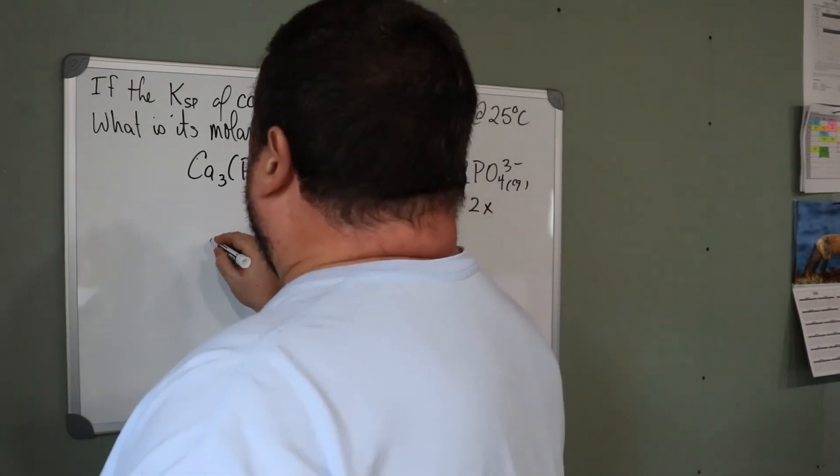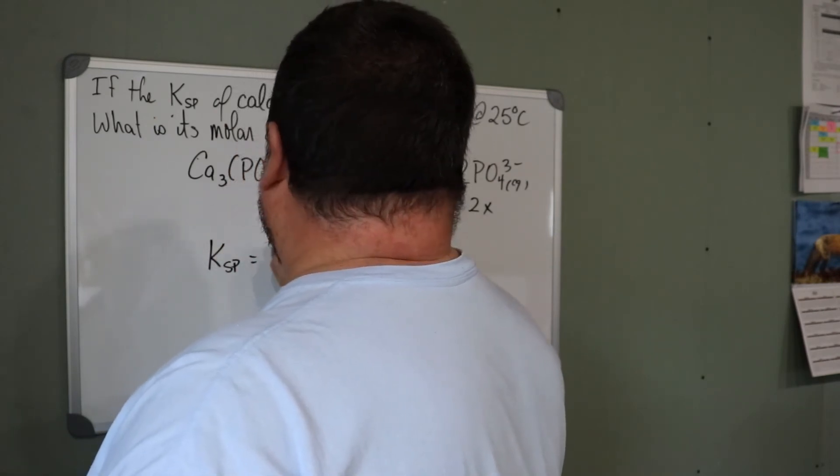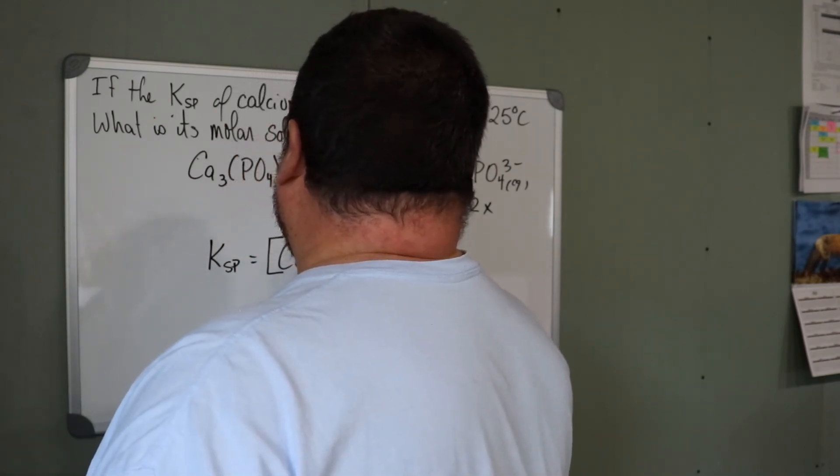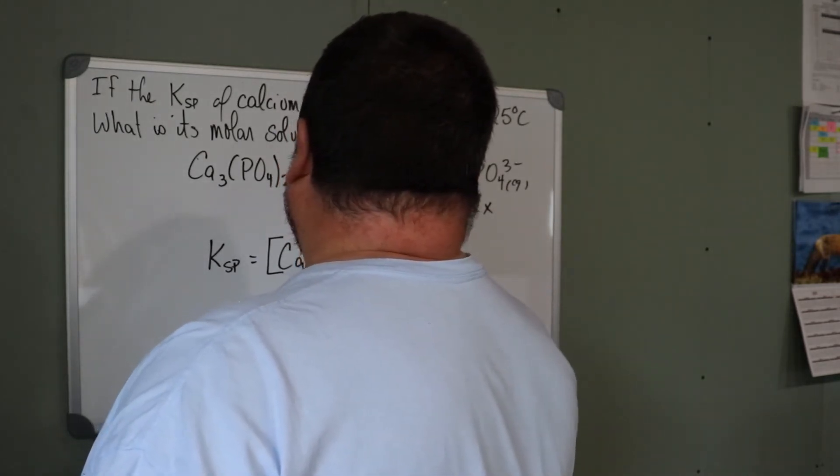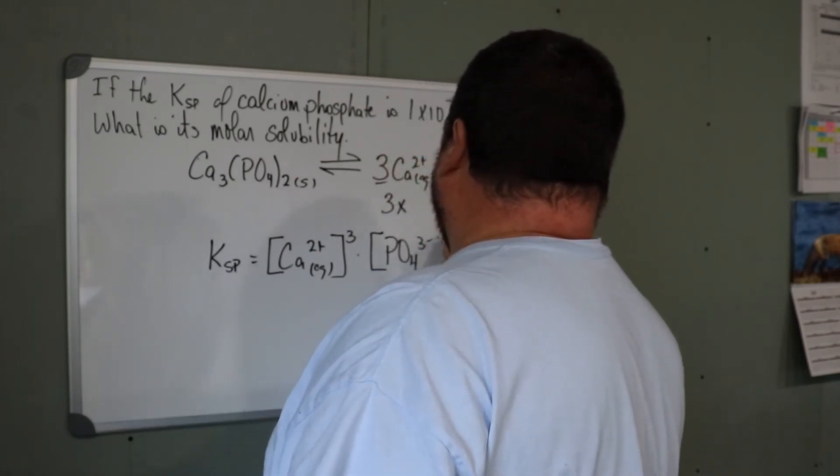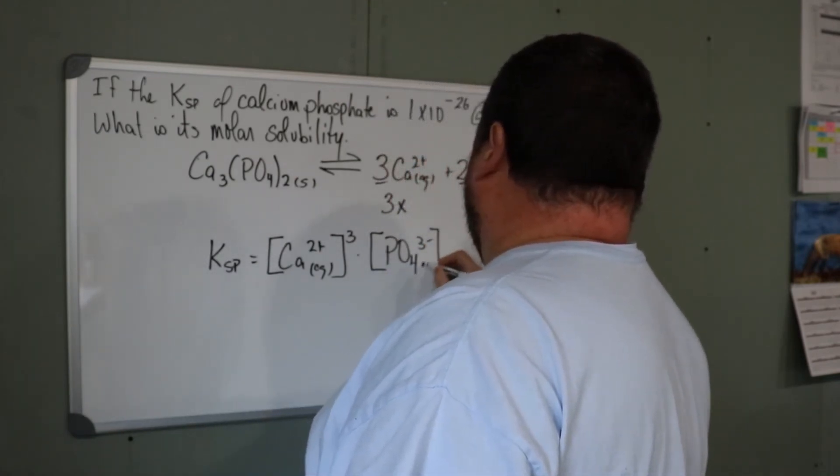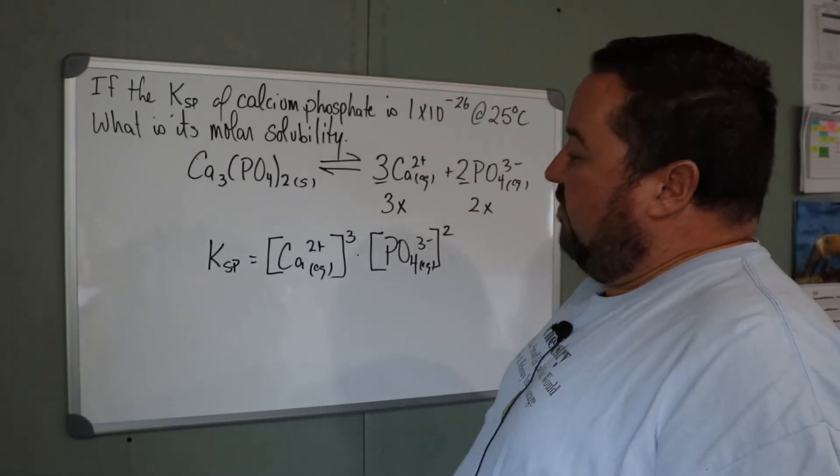Write the Ksp expression. It's the concentration of the calcium ion cubed times the concentration of the phosphate ion squared.